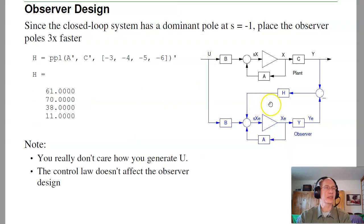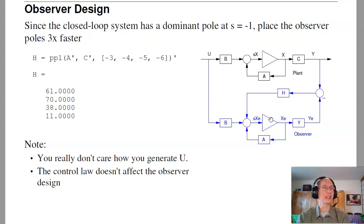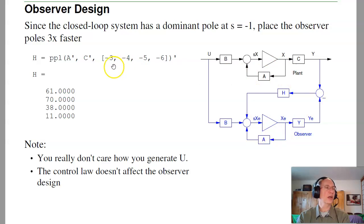Next, design the observer. When I design the observer, I ignore how I came up with the feedback controller — regardless of what u is, I force the observer states to track the plant states. I'll make the observer about three times faster than the plant, putting the poles at -3, -4, -5, and -6, and then compute the observer gains H.